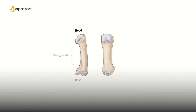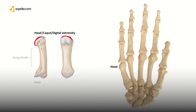The head has many names — it can be called the caput or the digital extremity. It has an oval surface which is remarkably convex from back to front and flat from side to side. The head articulates with the proximal phalanx. It is broader and extends farther upward on the volar aspect, and is longer in the anteroposterior diameter. On either side of the head, there is a tubercle for the attachment of the collateral ligament of the metacarpophalangeal joint.